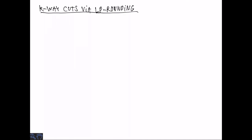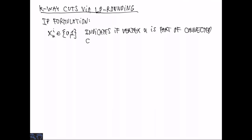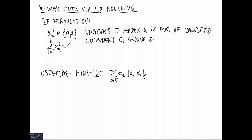To get a better approximation, we consider an integer programming formulation that we address via LP rounding. We introduce decision variables that indicate whether a vertex U is part of the connected component CI where SI is present. At most one of these can be set to 1. The objective is to minimize the sum of all the weights of edges that have endpoints in different components. The first try would be to say that this is the L1 difference between XU and XV, where XU is the k-dimensional vector indicating where U is present. The L1 distance is the sum of absolute differences between the components. It is one if and only if they are in different components.